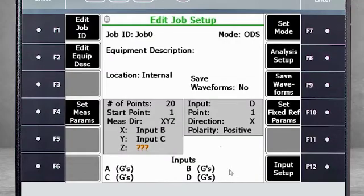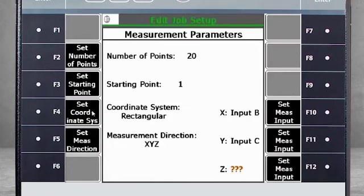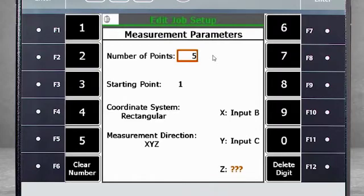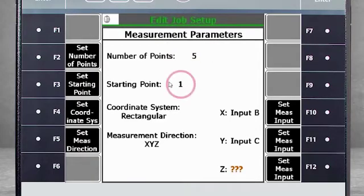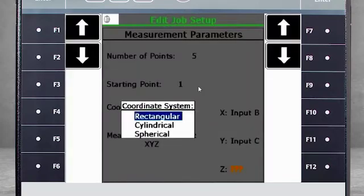Now to configure the triax sensor, you can select F4 set measurement parameters. A typical ODS job will contain 100 or more data points, but for this tutorial we will measure 5. We will start the job with point 1. You have the option to choose between rectangular, cylindrical, and spherical systems.